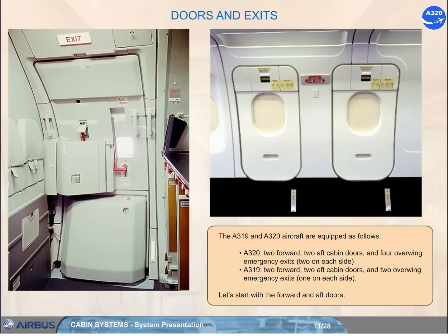The A320 has two forward and two aft cabin doors, and four overwing emergency exits, two on each side. The A319 has two forward and two aft cabin doors, and two overwing emergency exits, one on each side.